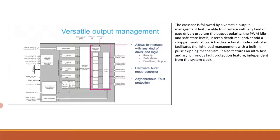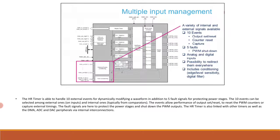On the left corner, you can see the multiple input management block. The HR timer is able to handle 10 external events for dynamically modifying a waveform, in addition to 5 fault signals for protecting power stages. The 10 events can be selected from external inputs or internal ones, typically from comparators. The events allow output set, reset, counter reset, or capture of external timings. The fault signals shut down the PWM outputs. The HR timer is also linked with other timers, as well as DMA, ADC, and DAC peripherals via internal connection.